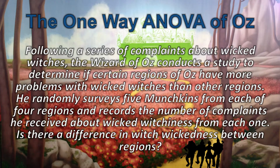Here is the research story for our One-Way ANOVA. Following a series of complaints about wicked witches, the Wizard of Oz conducts a study to determine if certain regions of Oz have more problems with wicked witches than other regions. He randomly surveys five munchkins from each of the four regions and records the number of complaints about wicked witchiness from each one. Is there a difference in wickedness between regions?